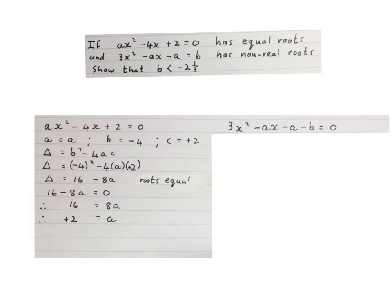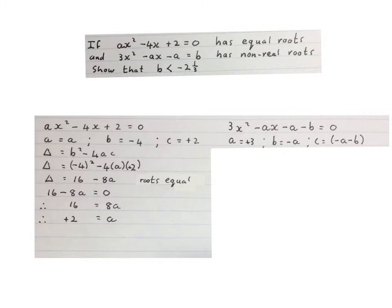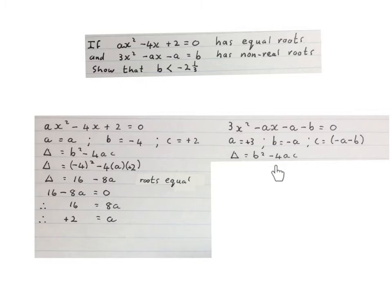Then we write down the other equation. I subtracted b on both sides to get it in standard form: 3x² minus ax minus a minus b equals 0. Again we work with b² minus 4ac. In this case, a is the coefficient of x² which is 3, b is the coefficient of x which is minus a, and c is everything at the back with no x — please put a bracket around it. We write down the discriminant b² minus 4ac and substitute these values in.